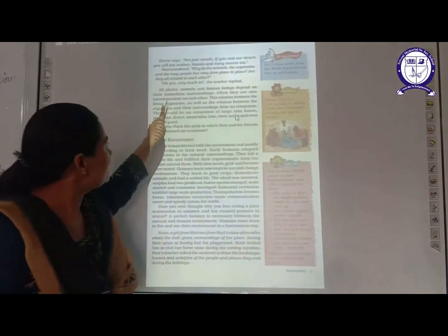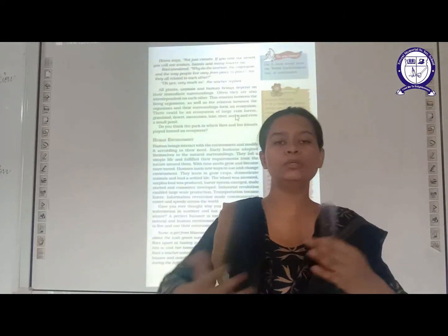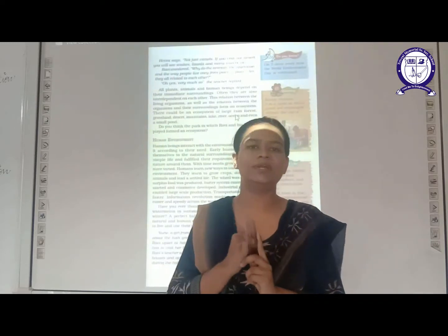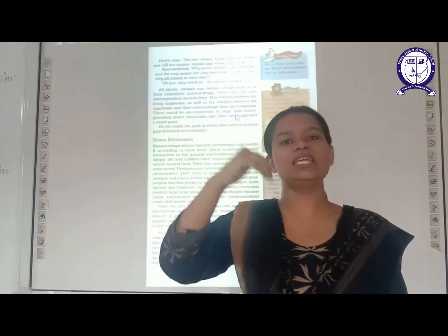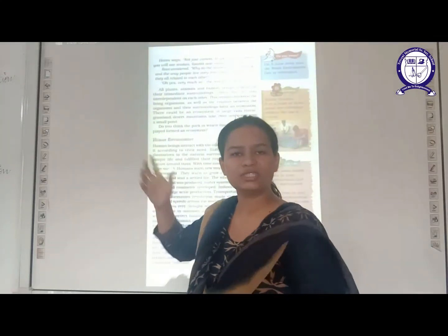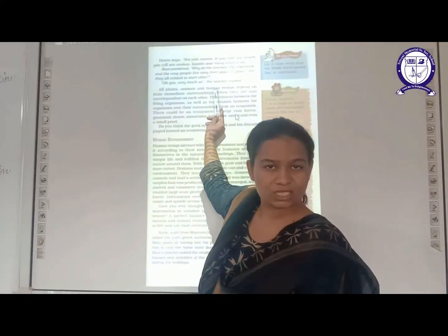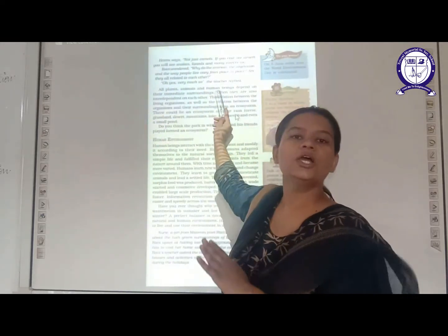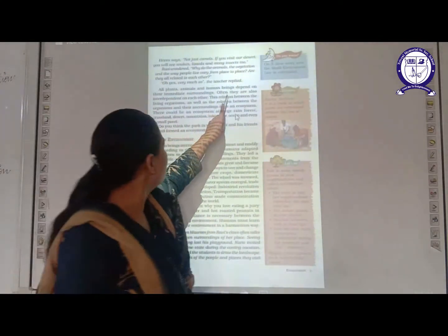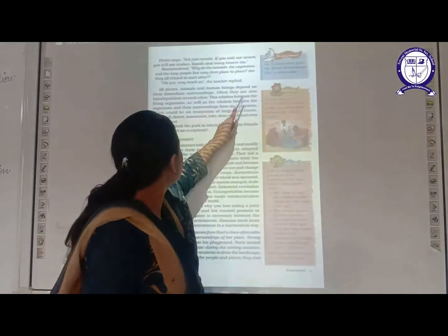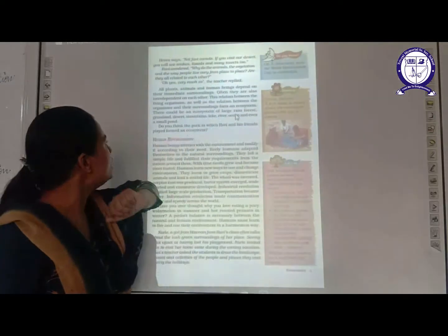Plants and animals are also interdependent on each other. Plants need carbon dioxide for photosynthesis — and they get it from animals. Animals need leaves to survive — and they get this from plants. So they are interdependent. The same case applies with plants and human beings: human beings release carbon dioxide for the plants, and plants release oxygen for the human beings. So all three are interdependent on each other. This particular relationship is called as ecosystem.